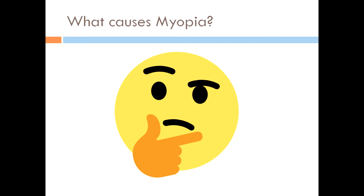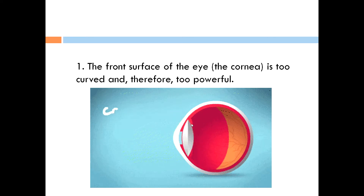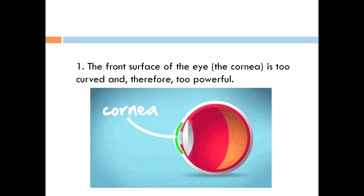So let's go with the causes. What causes myopia? First, the cornea is too curved and therefore too powerful. The front surface of the eye has too much curvature, so when light enters the eye, the ray of light cannot pass through directly onto the retina and is situated only in front of it, causing myopic vision.